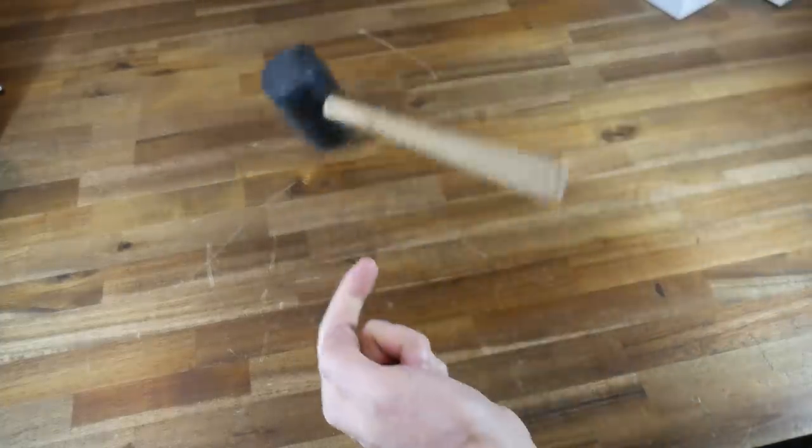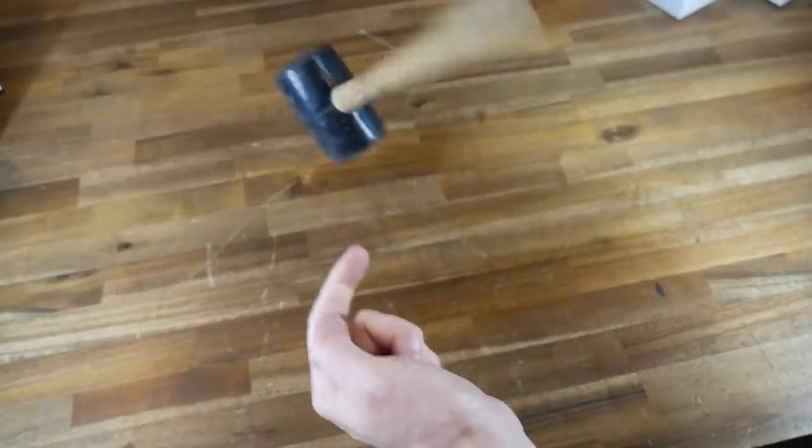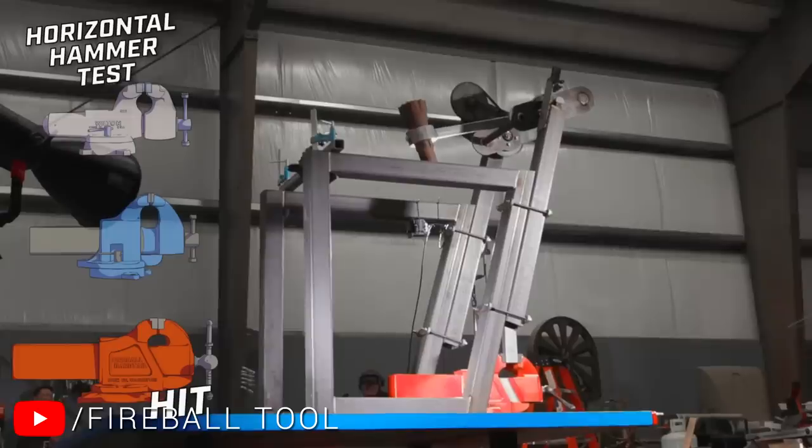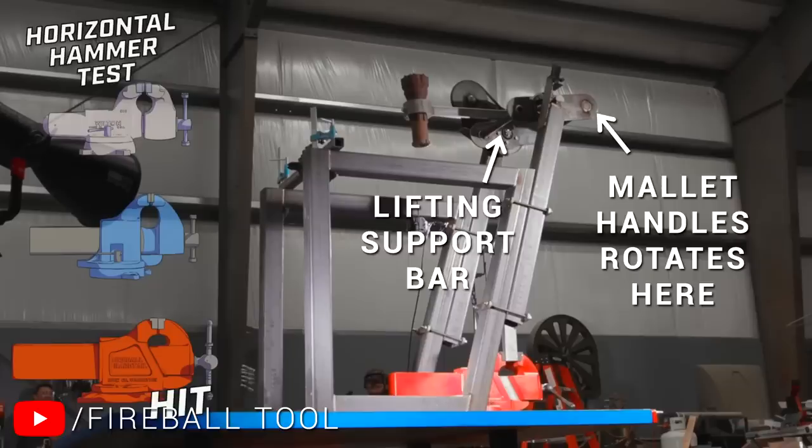But if we add a secondary lifting point, this job becomes much easier, and it also means the mallet is free to swivel when delivering the blow because it's decoupled from the lifter. If we pause the original video, we can see this in action, with the lifting support bar being separate to where the mallet handle rotates.